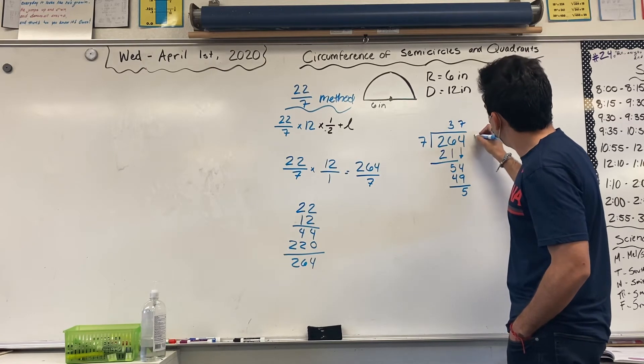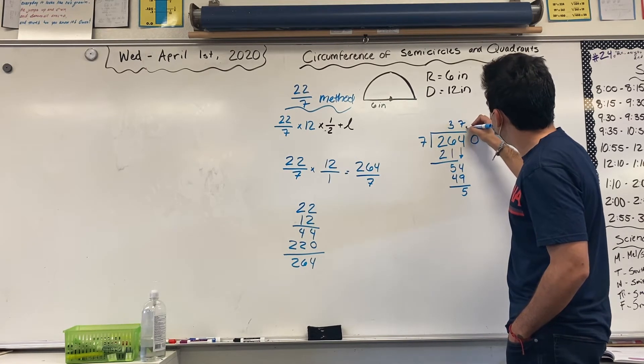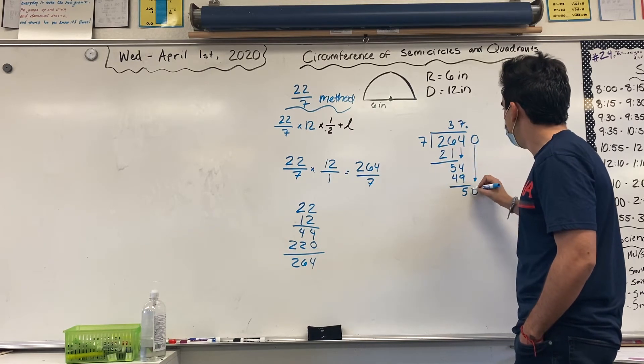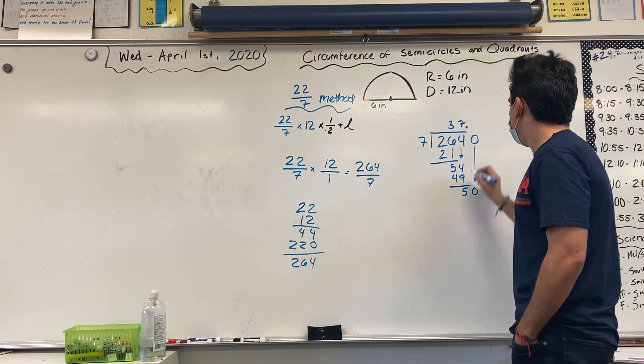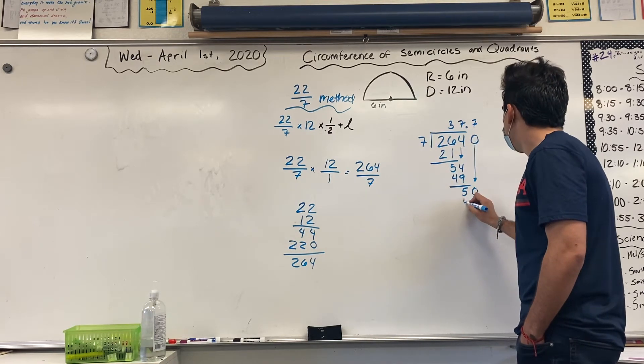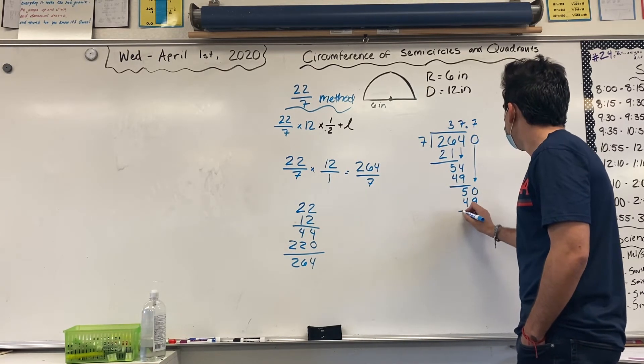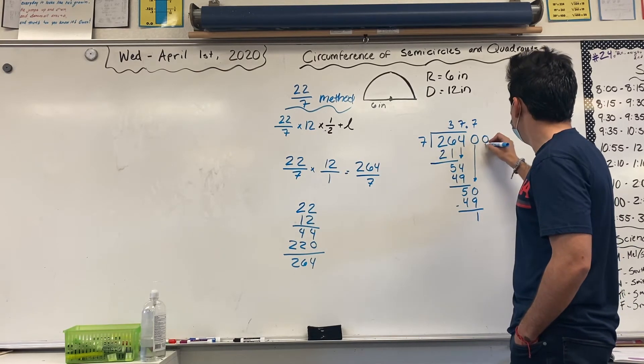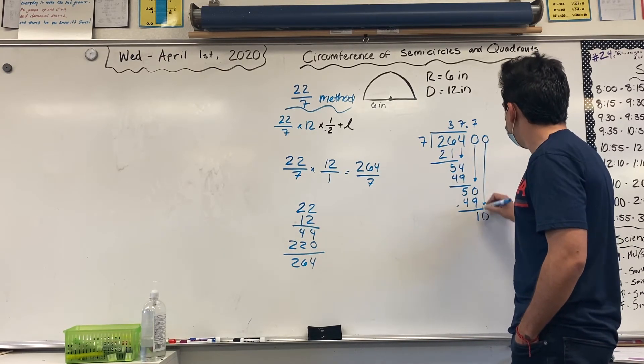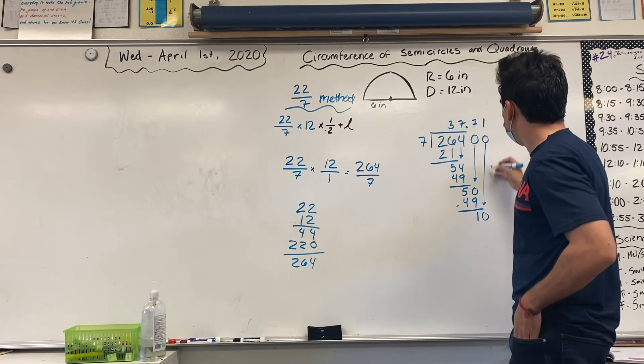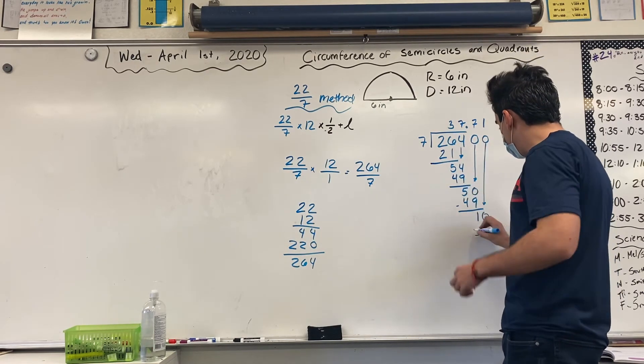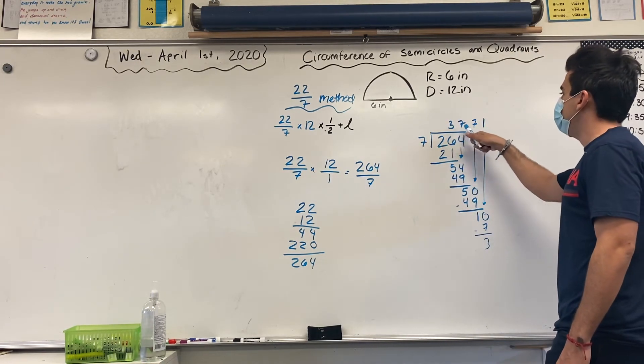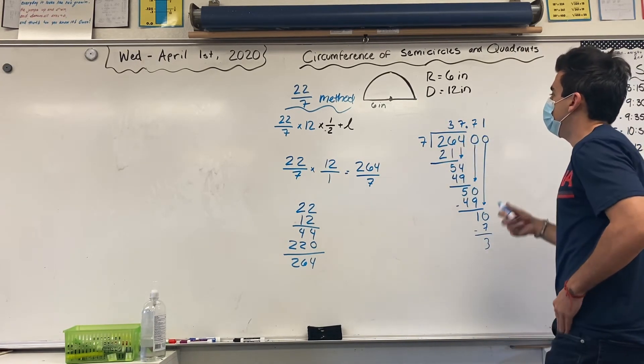Now, if I have to add a 0 here, I need to place a decimal point. Bring down my 0. 7 goes into 50 seven times. 49 again. Subtract, and I get 1. Bring down the 0. 7 goes into 10 one time. I am going to have a remainder. However, I want you to stop once you get to the 100s place. So, I have 37 and 71 hundredths.